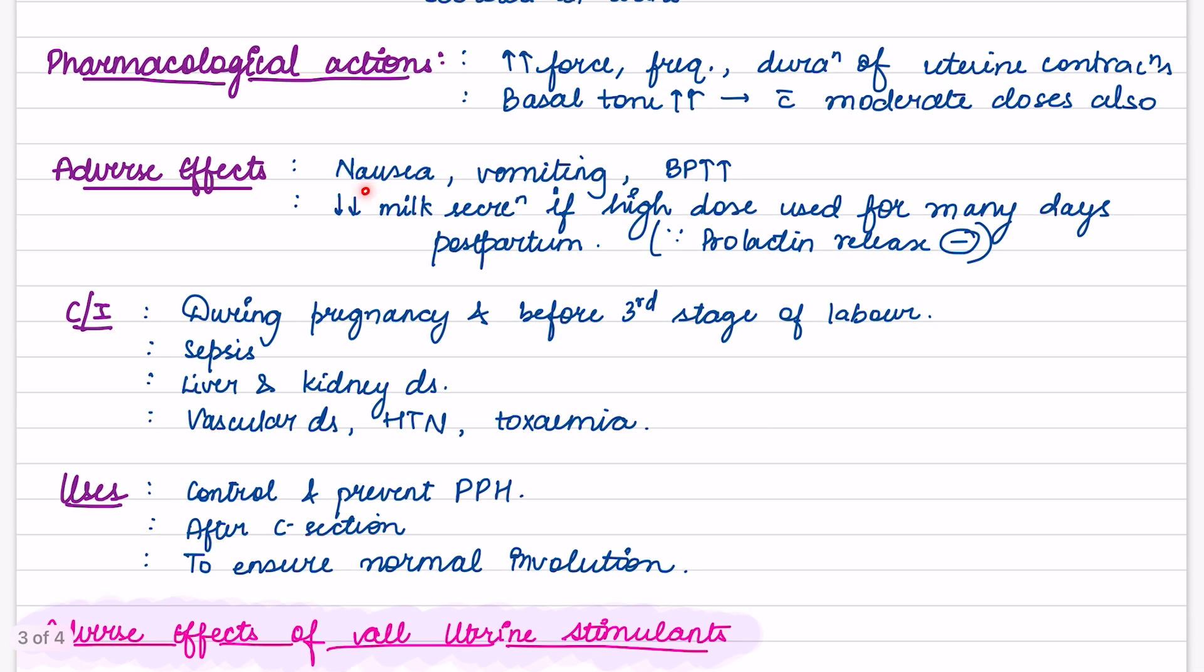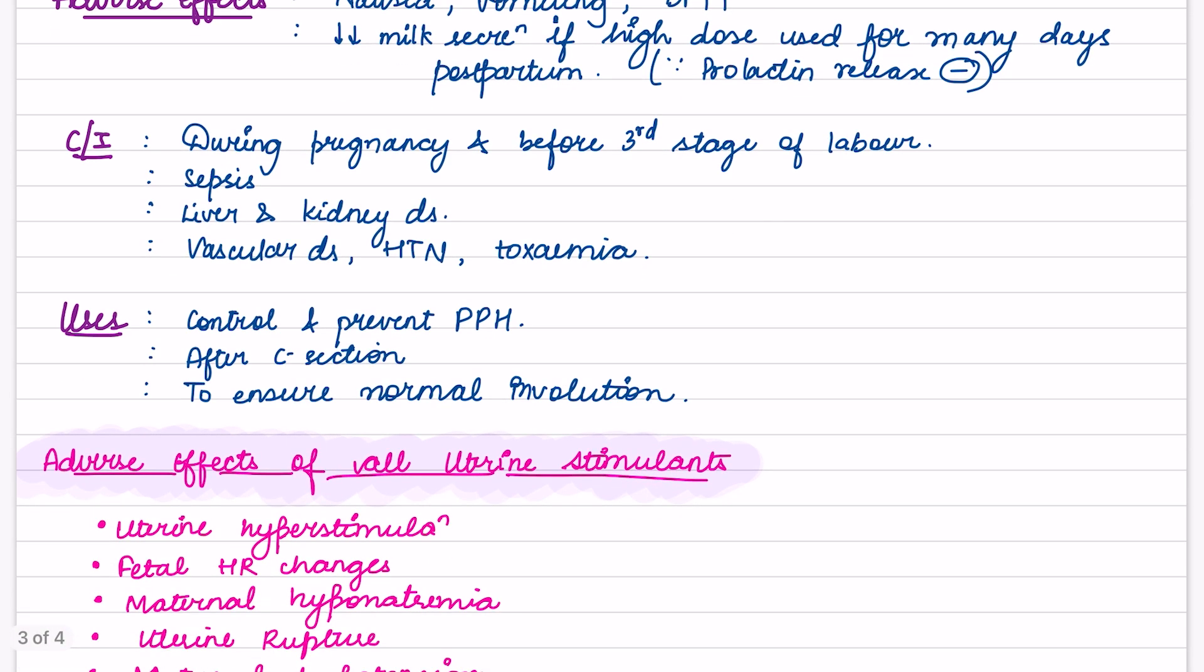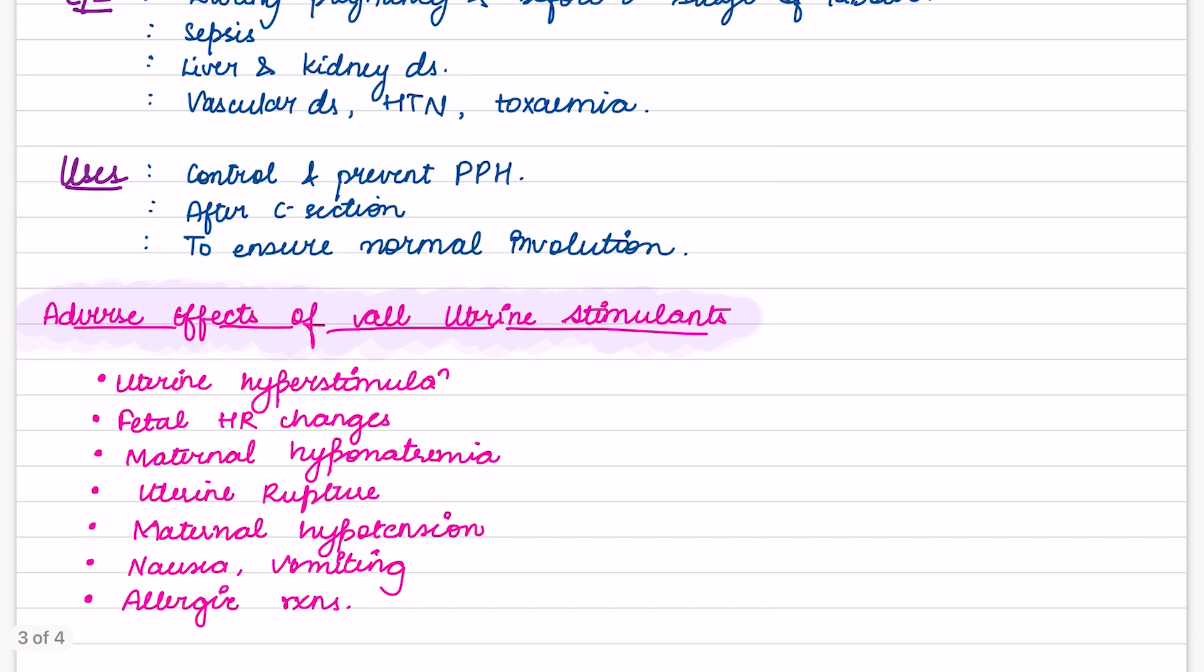Adverse effects: nausea, vomiting, BP increase. There is decreased milk secretion if high dose is used for many days postpartum because prolactin release is inhibited. Contraindications: during pregnancy and before third stage of labor, sepsis, liver and kidney disease, vascular disease, hypertension and toxemia. Uses: they control as well as prevent postpartum hemorrhage after C-section to ensure normal involution.